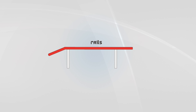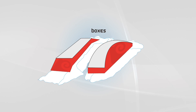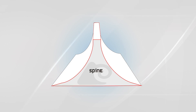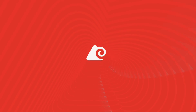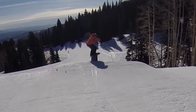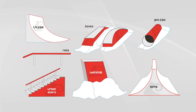These different features are put together in freestyle parks or terrain parks. They use features like a spine, and they might put a rail, a box, a mailbox, or other obstacles on it. They use these combinations and put them together.